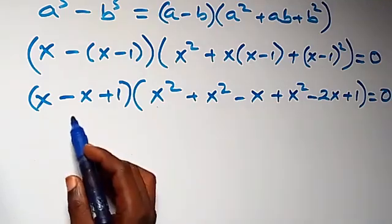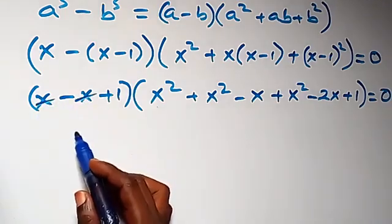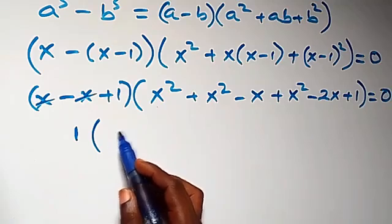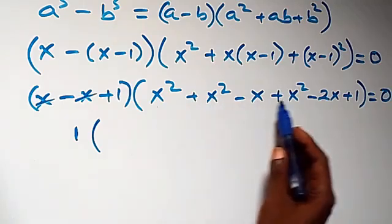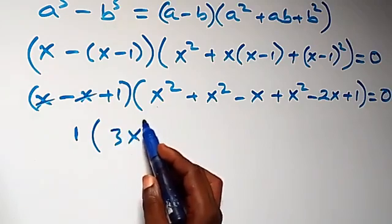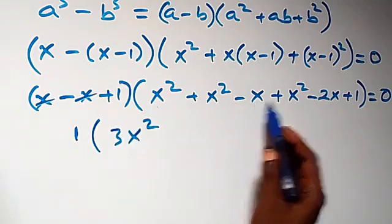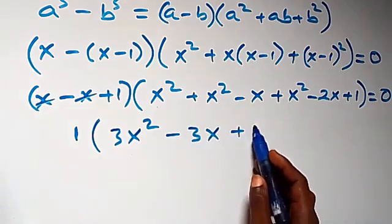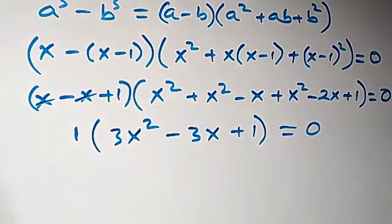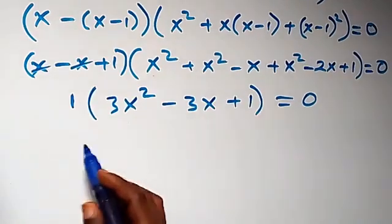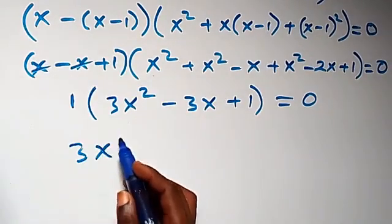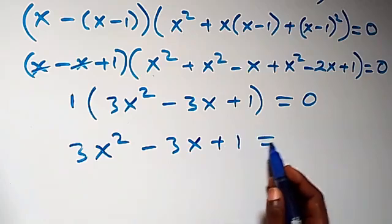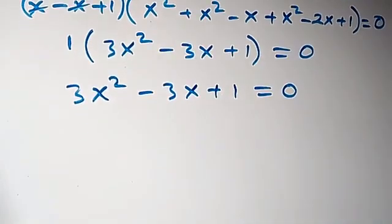Simplifying: x minus x cancels leaving one, multiplied by bracket x squared plus x squared plus x squared, that is three x squared, minus x minus two x giving minus three x, plus one, close bracket equals zero. This simplifies to three x squared minus three x plus one equals zero.